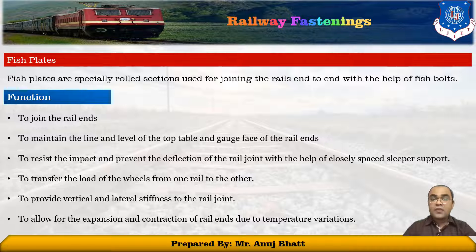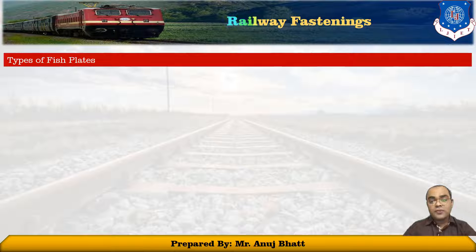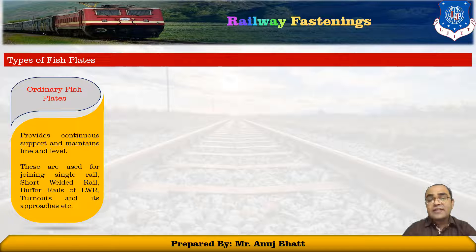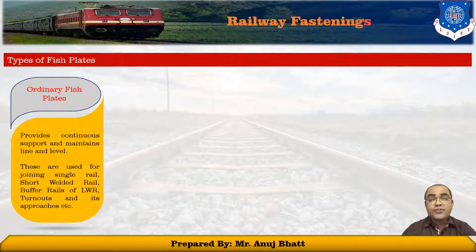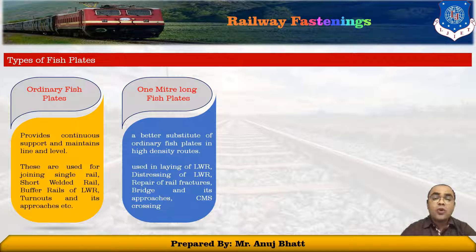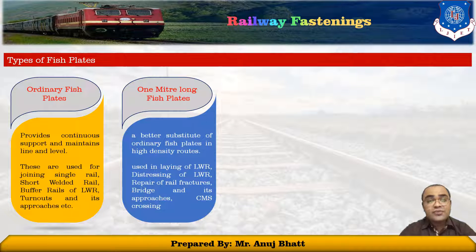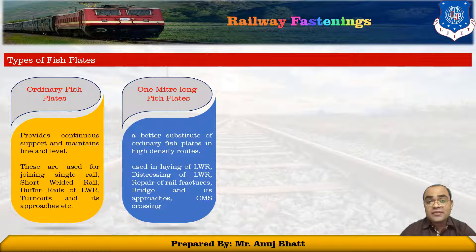Now let's discuss the types of fish plates. The first is the ordinary fish plate, which provides continuous support and maintains the line and level of the rails. These are used for joining single rails, short welded rails or buffer rails, turnouts, and some approaches. The next is the one-meter long fish plate, which is a better substitute for the ordinary fish plate. It is generally used in laying low welded rails, repair of rail fractures, bridges, and their approaches. Such one-meter fish plates are used in critical places, as per instruction, for rail joints on monobloc concrete.